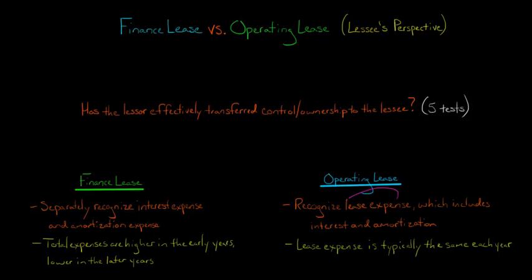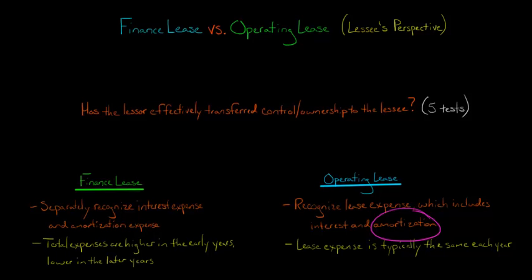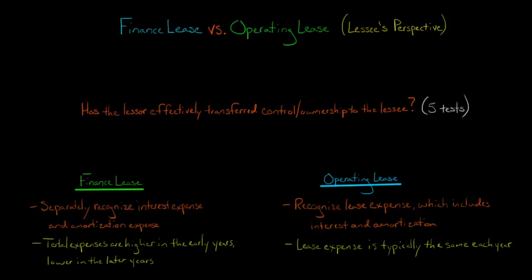That's a little misleading because the lease expense under operating actually includes both interest and amortization. In both cases, we're going to make an effective interest table to figure out what interest is effectively accrued on the lease liability, and we're going to be amortizing the right-of-use asset recognized in each case. So in some ways, the finance lease and operating lease are very similar — we recognize an asset, amortize it over time, recognize a lease liability, and recognize interest on that lease liability.